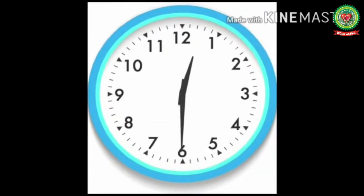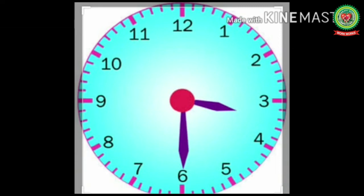Now what time is it? The long hand is pointing at six, so the time is half past the hour. Now half past what? The short hand has moved halfway from twelve towards one. It means the short hand is pointing exactly halfway between twelve and one. So the time is half past twelve, or twelve thirty.